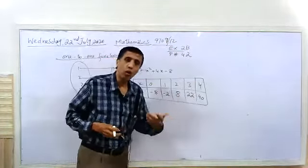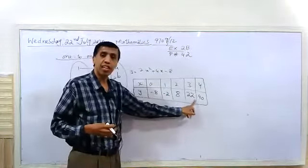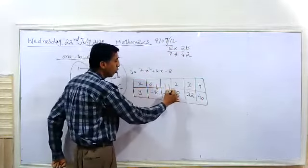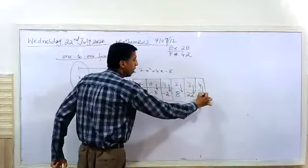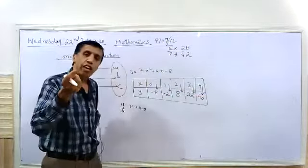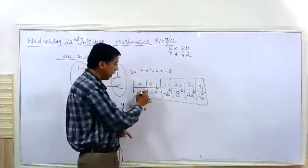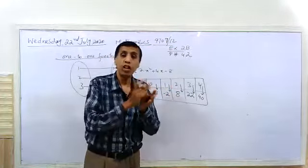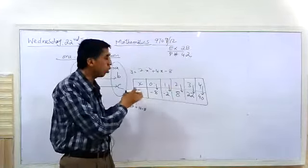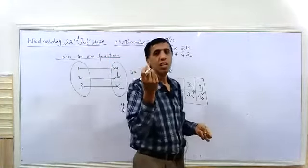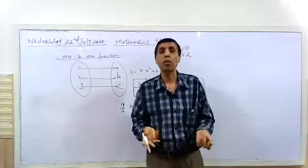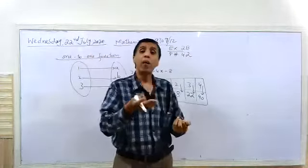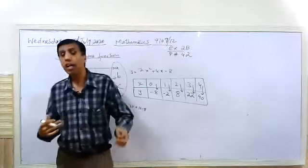No value is repeated in the y section — this means it is a one-to-one function. Every input has a unique output; no value is repeating. If a value repeats in the y area, it means it is NOT a one-to-one function. This is very important because Cambridge always asks this question. It may be only one mark, but you should know it. It is better to draw a table of the equation and evaluate whether it is one-to-one or not.